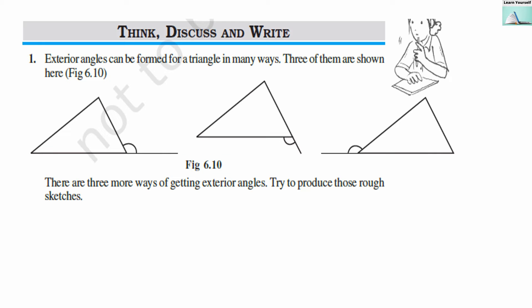Welcome to Learn Yourself. Think, discuss, and write based on the exterior angles concept. The first question is: exterior angles can be formed for a triangle in many ways. Three of them are shown here — this is the first exterior angle, second, and third exterior angle. Now there are three more ways of getting exterior angles; try to produce those rough sketches.